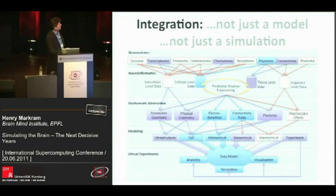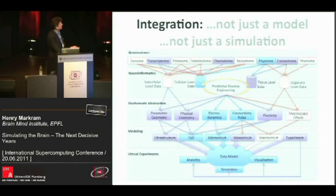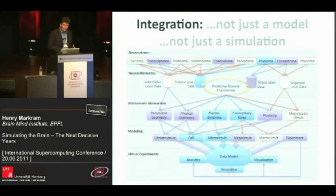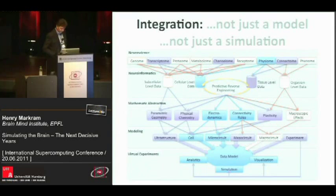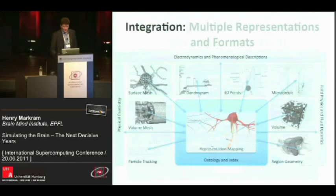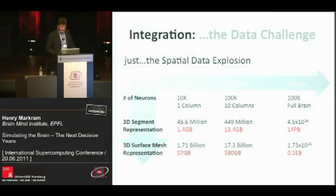It's not just a model or a simulation. To do this, you have to do a global integration — integrating all the neuroscience from the genes all the way up to the phenotype and emergent behaviors. You have to database this information, apply predictive reverse engineering to find rules and patterns and make predictions, use mathematical abstractions across all levels, build models at all different levels, and have the capability to do virtual experimentation. There are multiple representations, which explodes the data space required.